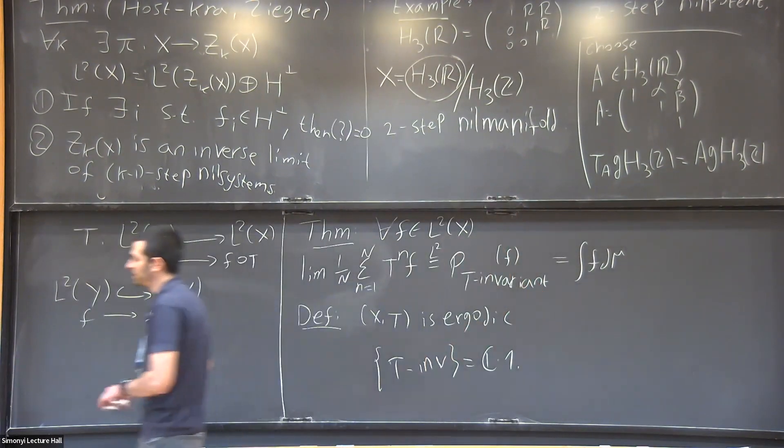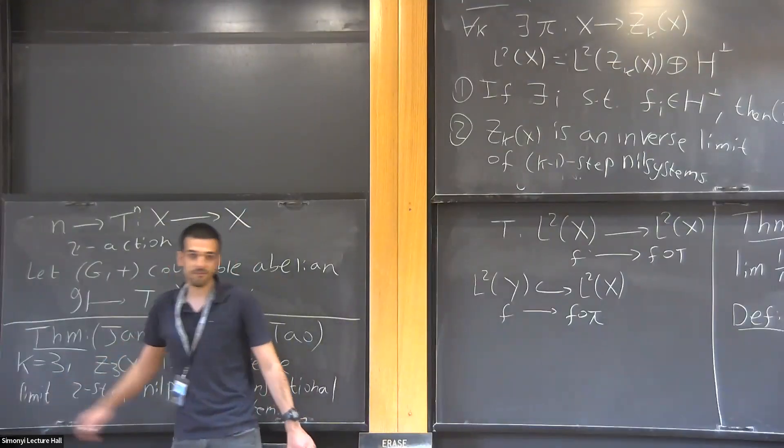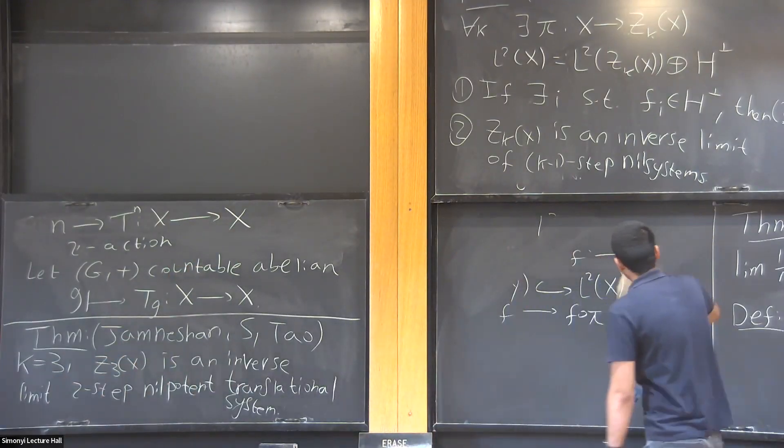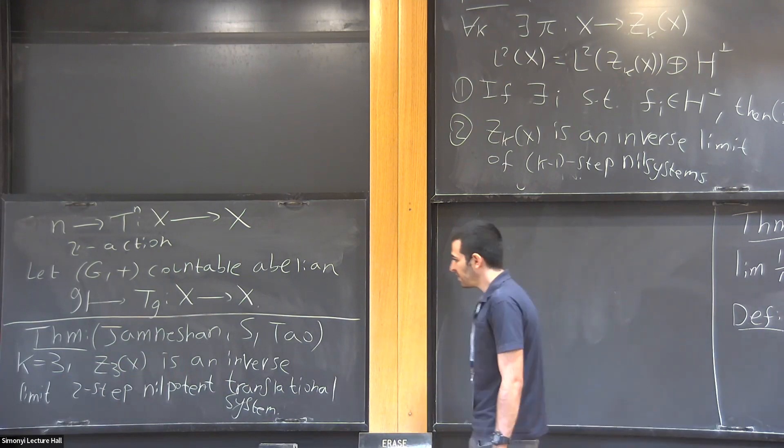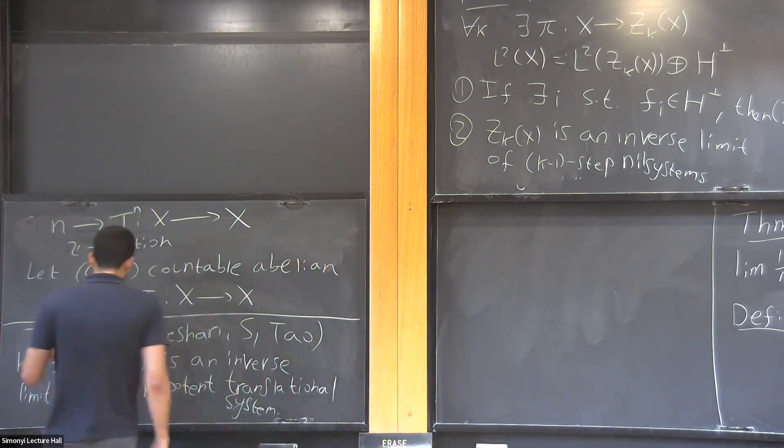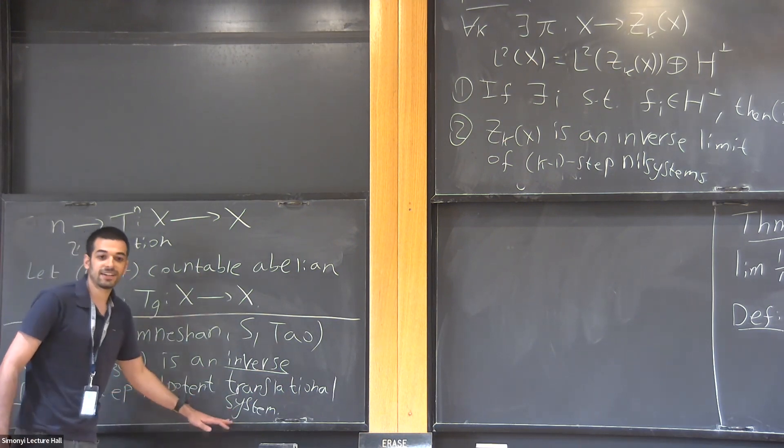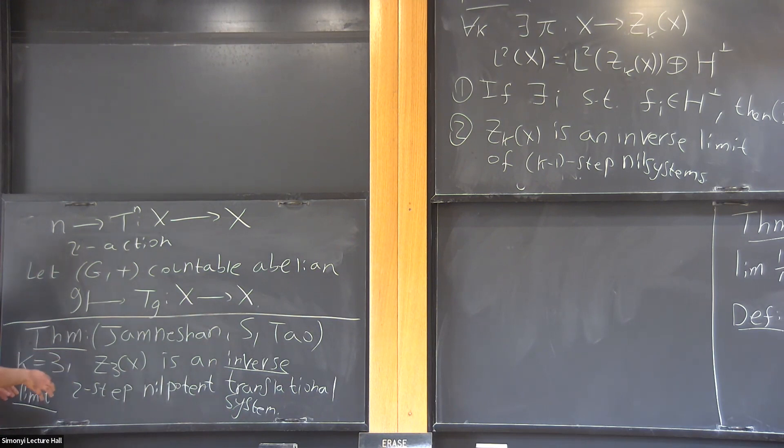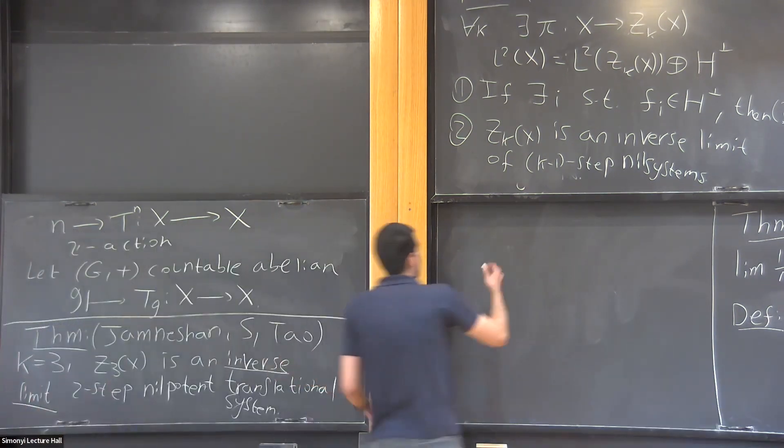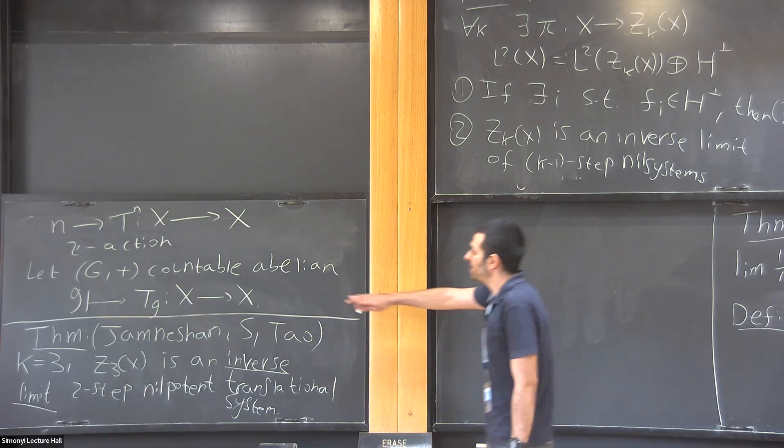Then we tried to see what happens for higher values of k, and we end up having a problem. Essentially, the problem is that this theorem and the other theorems that I told you about are not structure theorems, they are approximate structure theorems. They use the notion of an inverse limit. You know nothing about this special factor. You can approximate it by nice factors. And if we could somehow eliminate this inverse limit, we could entirely generalize this to higher values of k. But unfortunately we can't.